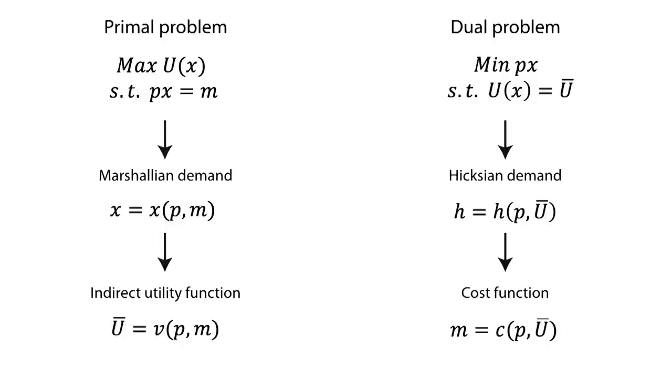As we've seen, consumption duality can be understood as a coin. Heads, the consumer tries to maximize their utility subject to a given monetary restriction. Or tails, the consumer tries to limit their expenses subject to a desired utility level. Either way, the problem can be easily solved, especially when analyzing and properly using Marshallian and Hicksian demand functions.